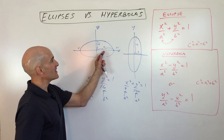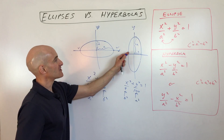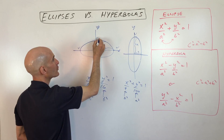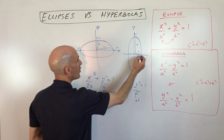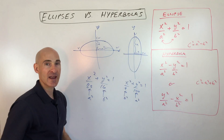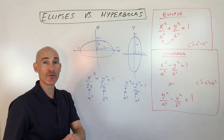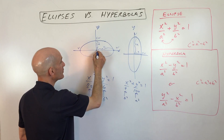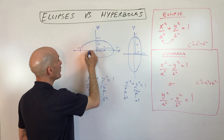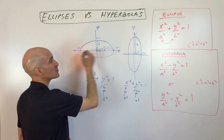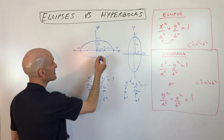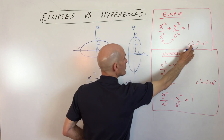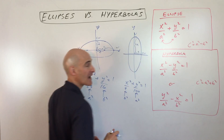So the distance from the center to the vertex — that distance is a. The distance from the center to the co-vertex or minor vertex, that distance is b. Now the other component are the foci. The foci are the distance from the center to the focal points, which lie on the major axis — the longer axis. That distance is c.